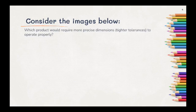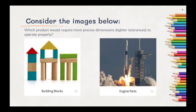Consider the images below. Which product would require more precise dimensions or tighter tolerances to operate properly? The image on the left is of children's building blocks. The image on the right is meant to represent different engine parts for a space shuttle. Obviously, the children's building blocks require less precise dimensions and tighter tolerances than the engine parts, therefore making the children's building blocks easier to mass produce and more affordable. The engine parts would have to be incredibly precise and therefore very expensive.